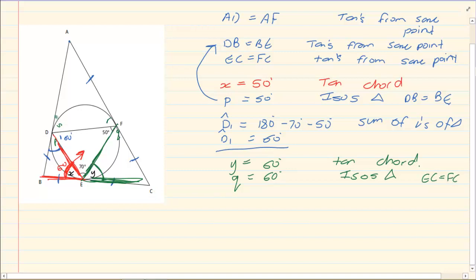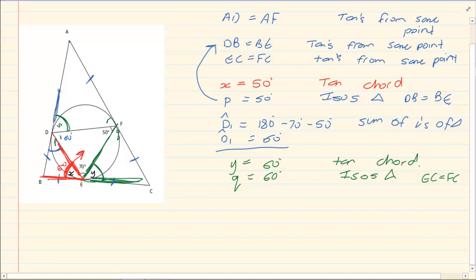Last, what is S? S is equal to 70 degrees. Look at how it works: here is your tangent, then you have your line, and if you take the opposite direction it is moving in, it goes towards that 70. So S is equal to 70 degrees — tan-chord theorem.